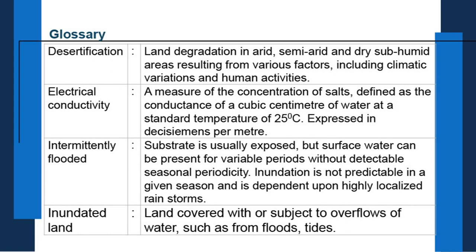Intermittently flooded — substrate is usually exposed, but surface water can be present for variable periods without a predictable seasonal pattern. Inundation is not predictable in a given season and depends on highly localized rain storms. Inundation means a land is full of water — water standing above the land, covered with or subject to overflows of water such as from floods or tides.